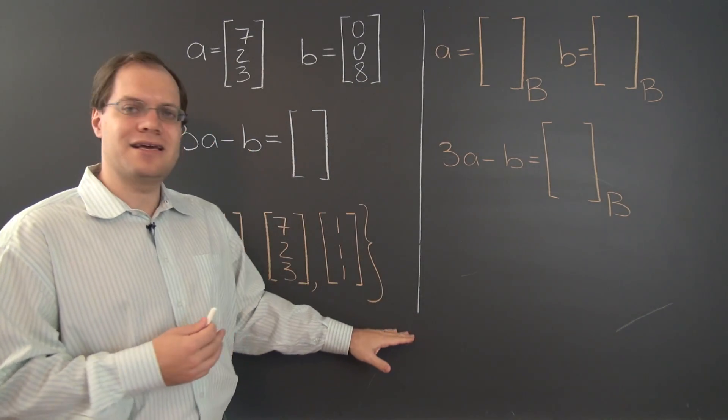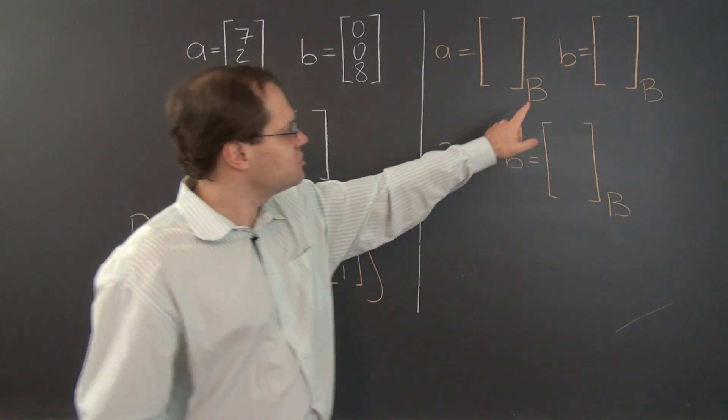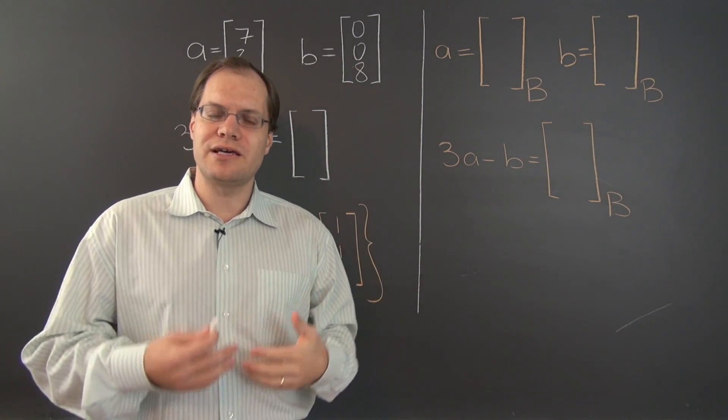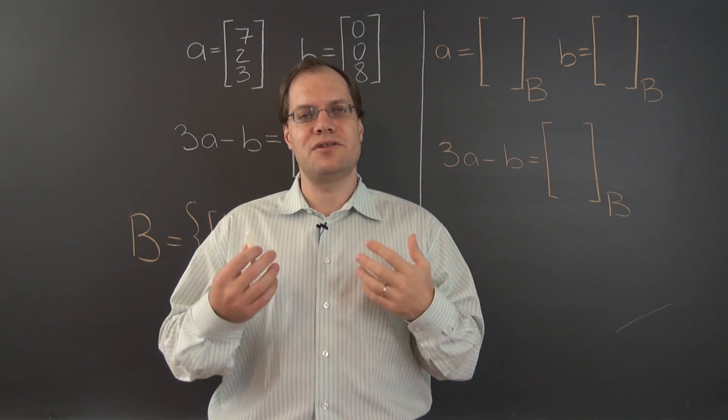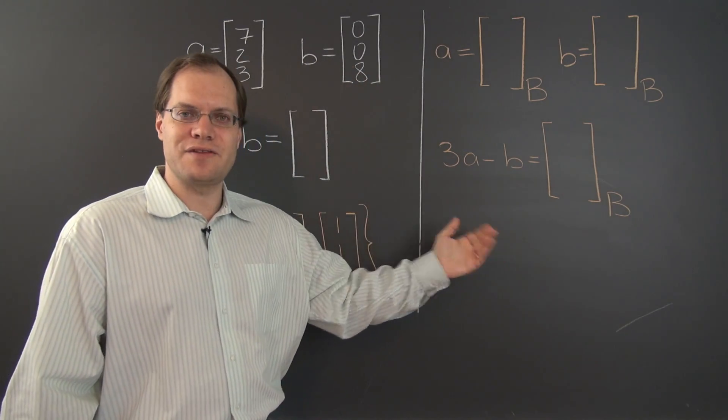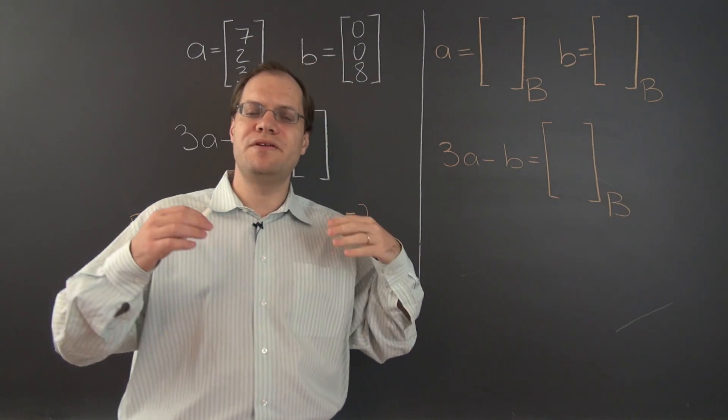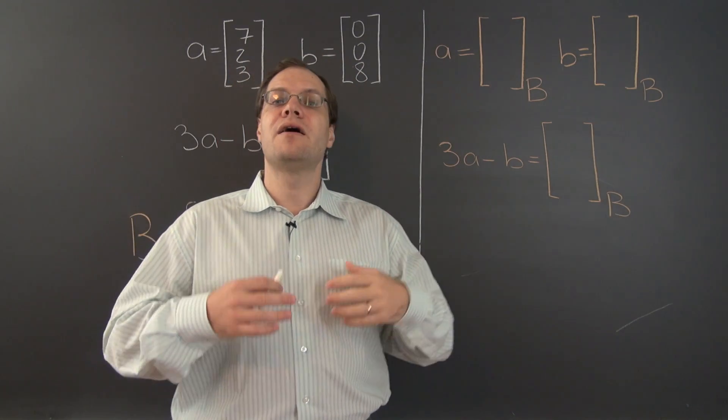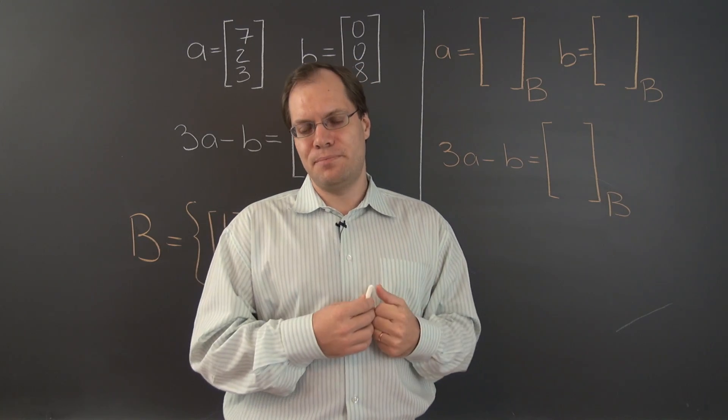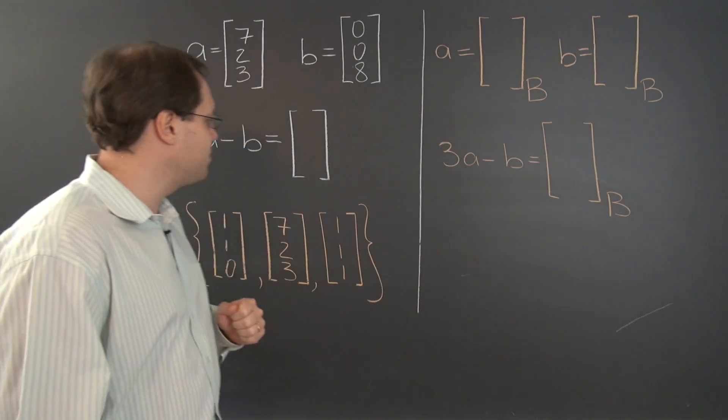So in this case we're making it easy because we're number one color-coded our spaces, and number two we're writing this sub B to indicate that we're actually looking at components with respect to the basis B. But in some other situations you might not have the color coding and you might not have the subscript B, so you just have to be very careful as far as whether you're looking at the vector itself or its components with respect to some basis. So let's keep that in mind and complete this example.